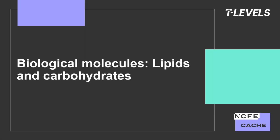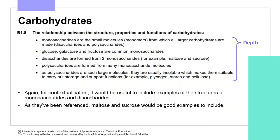We are now going to look at the content, depth and delivery ideas for lipids and carbohydrates. As with proteins, carbohydrates are introduced within B1 with reference to the structure, properties and functions of carbohydrates. Students need to be aware that monosaccharides are the monomers from which disaccharides and polysaccharides are built. Common monosaccharides include glucose, galactose and fructose; maltose and sucrose are the disaccharide examples. A polysaccharide is formed from many monosaccharide molecules, with examples of starch, glycogen and cellulose.